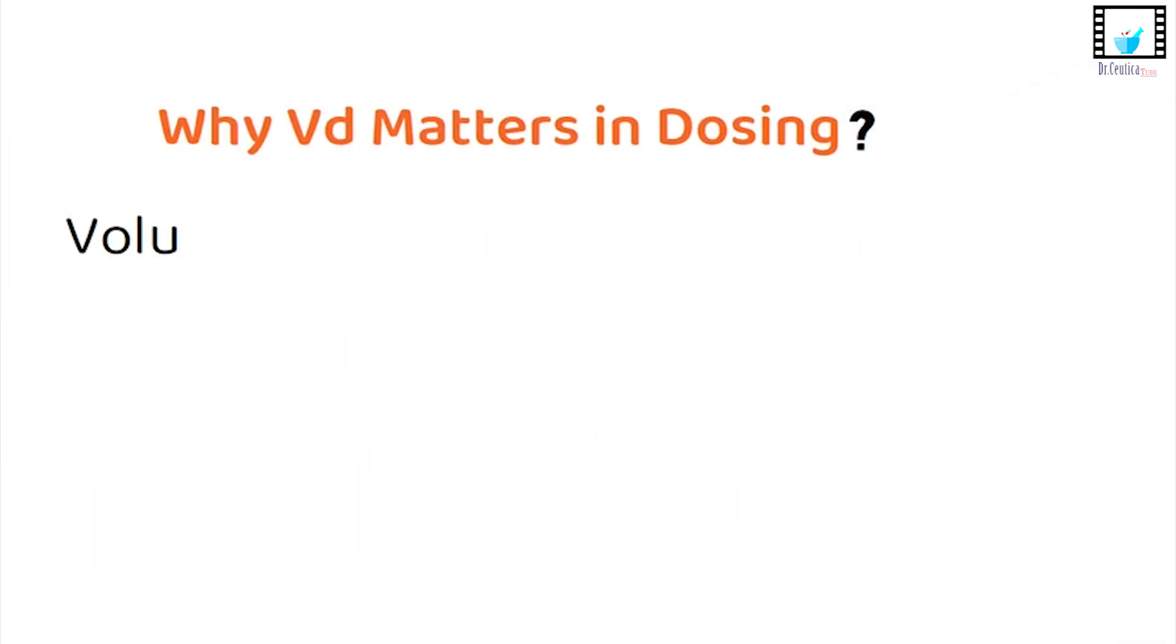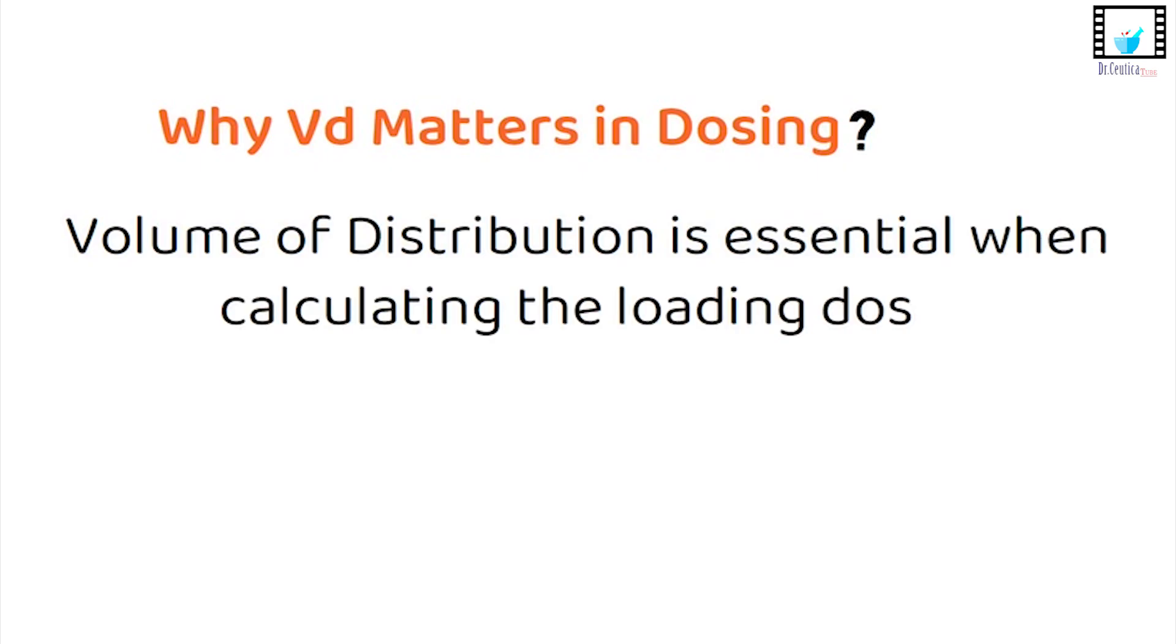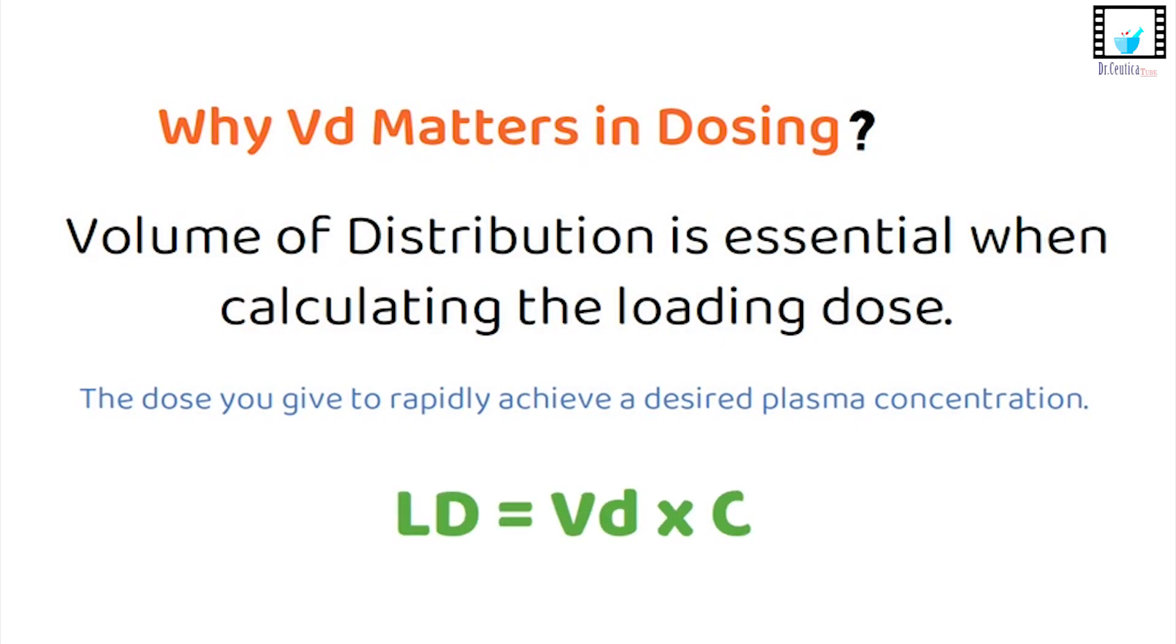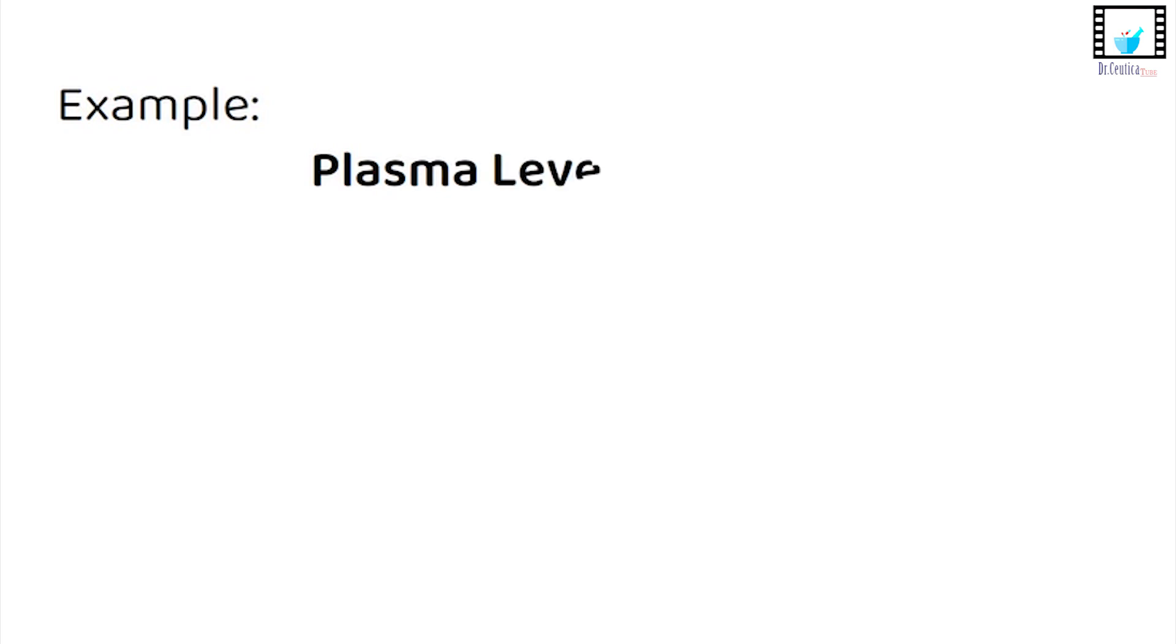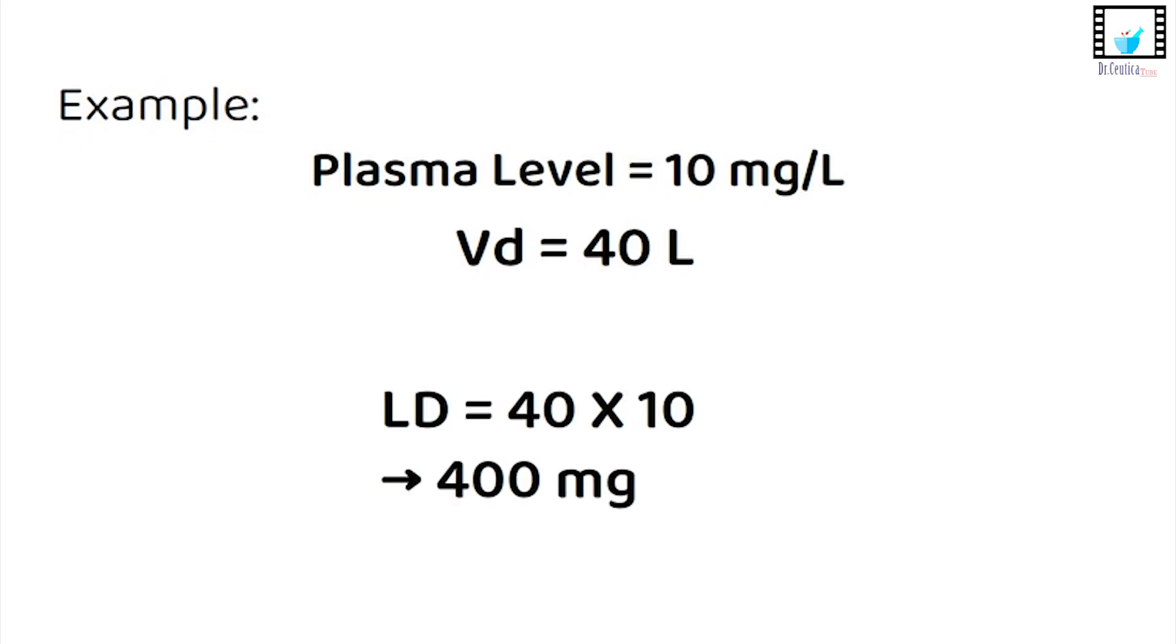VD is important when calculating the loading dose, the dose you give to rapidly achieve a desired plasma concentration. And the formula is as follows. Loading dose equals VD times the targeted plasma concentration. So if you want a plasma level of 10 milligrams per liter and the volume of distribution of the drug is 40 liters, then the loading dose would be 400 milligrams.